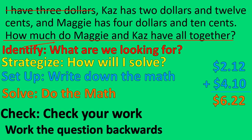You can also do the math backwards. Is $6.22 minus $4.10 equal to $2.12? Yes, that is correct. So you can use the opposite operation — instead of adding, you would do subtracting. This is called using the inverse operation. You can use the inverse operation to double check your work.